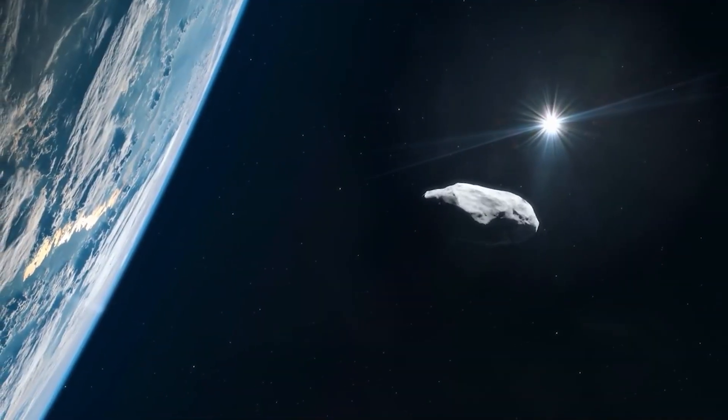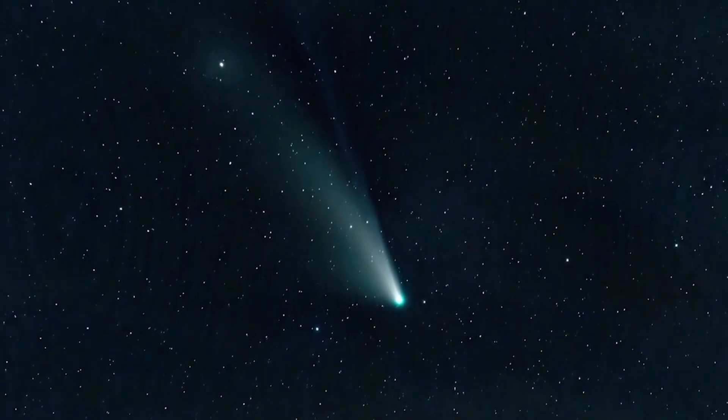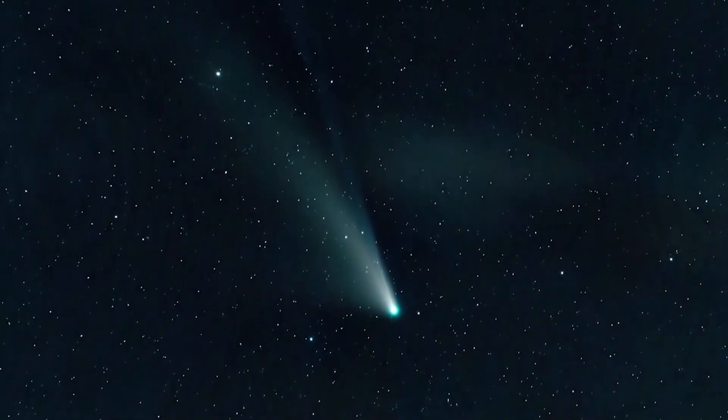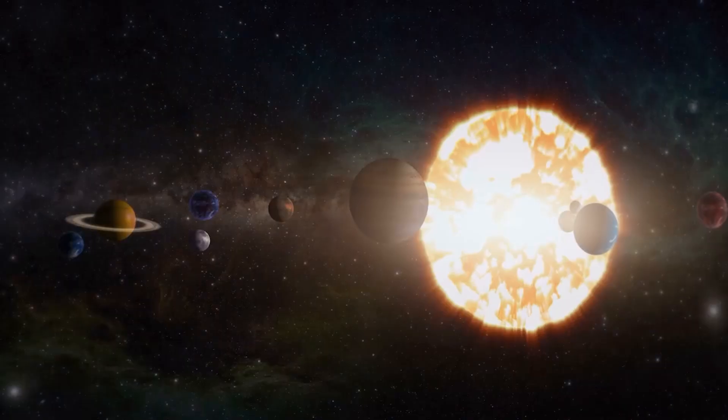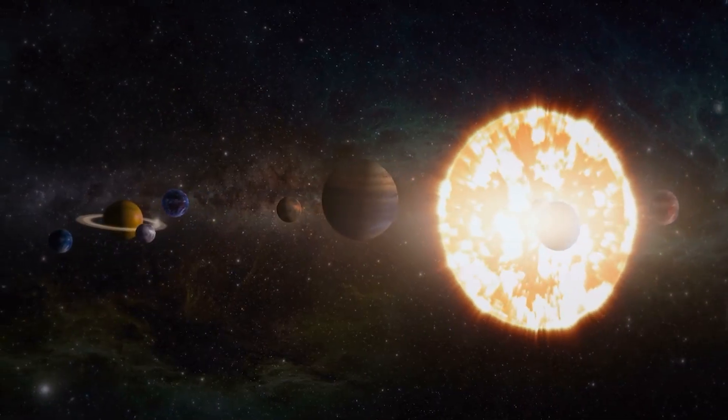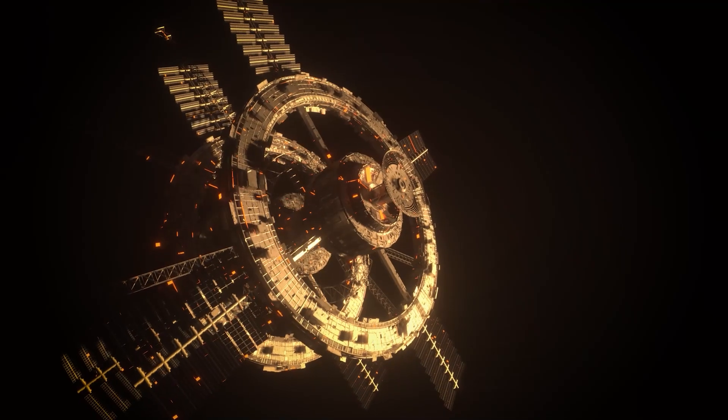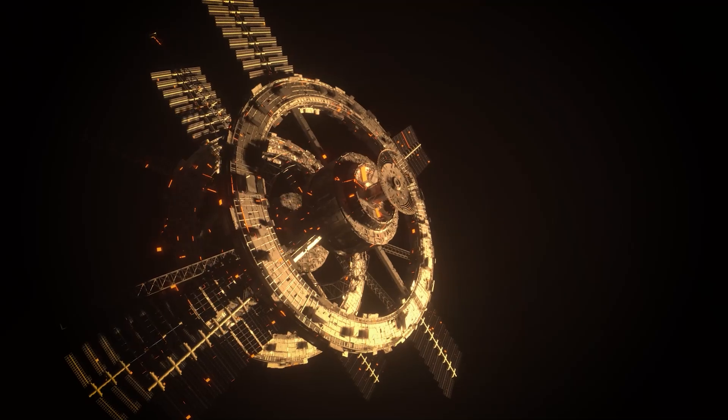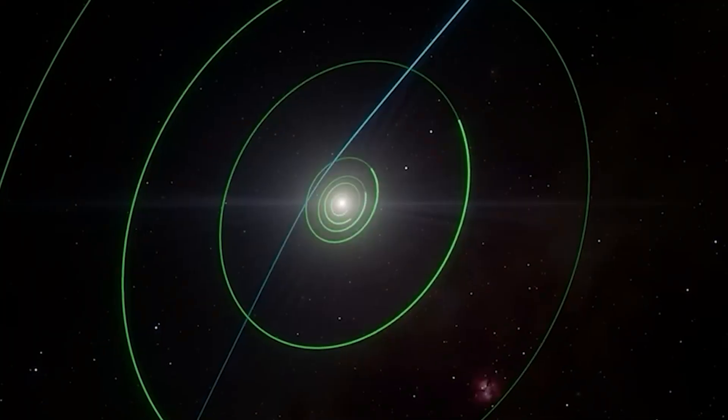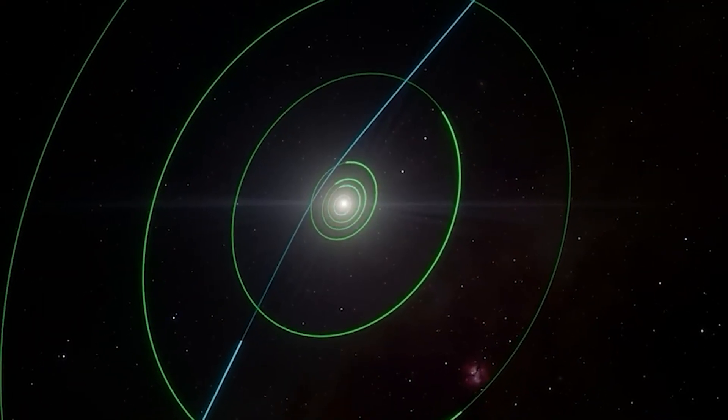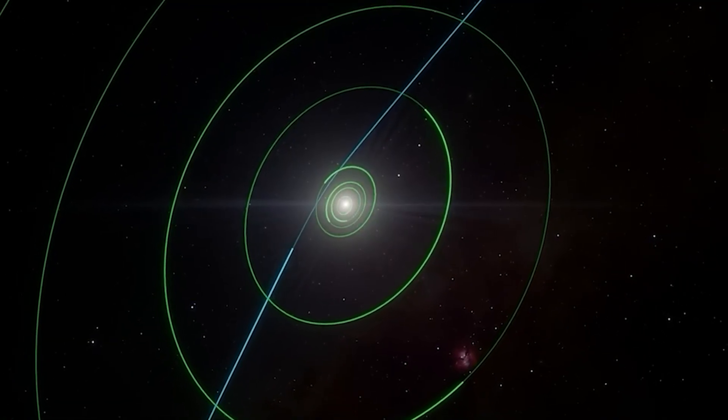This would explain the non-gravitational acceleration. It's not being pushed by little gas jets, it's being actively maneuvered, using our sun as its personal fuel station. This alien engine would allow it to change course, speed up or slow down, making its journey a deliberate and controlled traversal of our solar system.